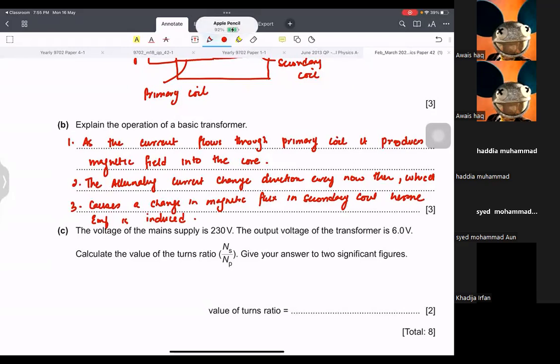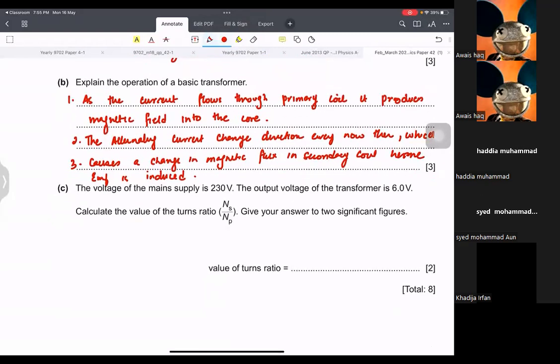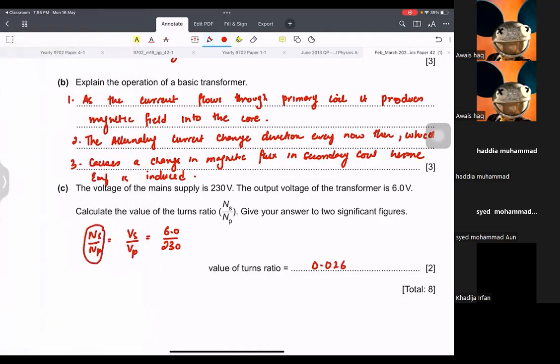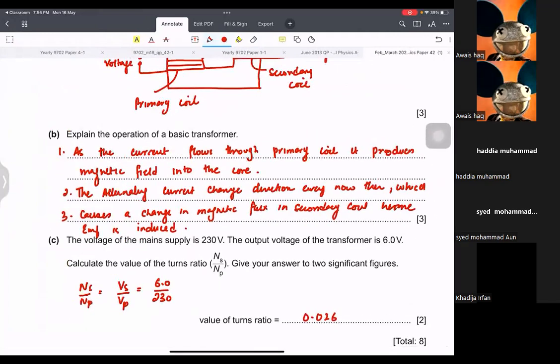The voltage main supply is 230 and the output of the transformer is six volts. Calculate the value of Ns over Np. Give your answer in two significant figures. Let's do it. Ns over Np is equal to Vs over Vp. So the Vs is six, Vp is 230. So six divided by 230. It's 0.026. That ratio has same quantities. Like they're the same units really. So you don't have to, they don't have any units.